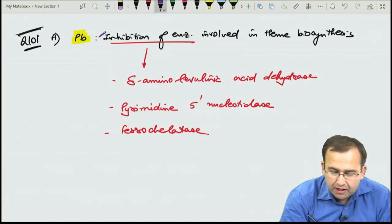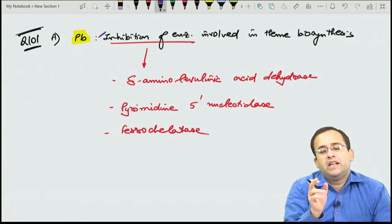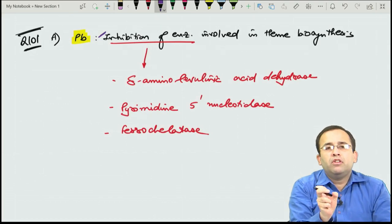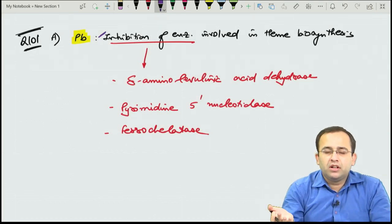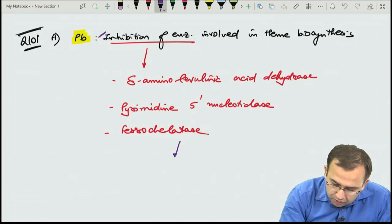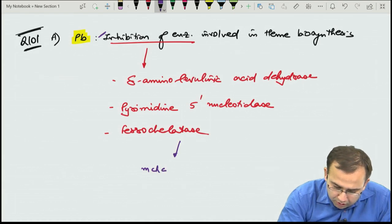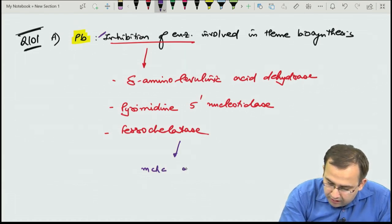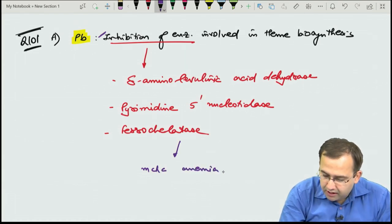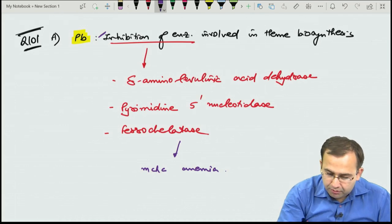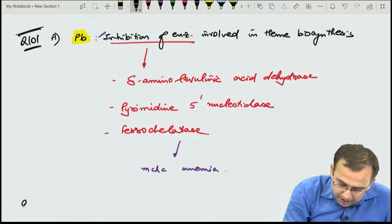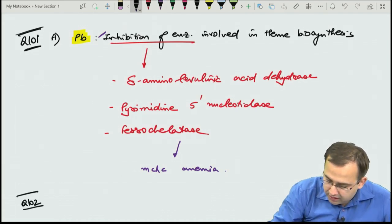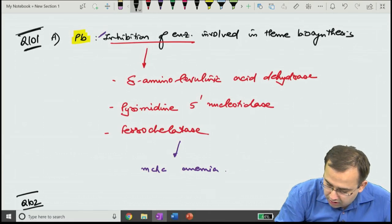Because of inhibition of these enzymes, iron will not be incorporated into heme, in turn leading to microcytic hypochromic anemia.